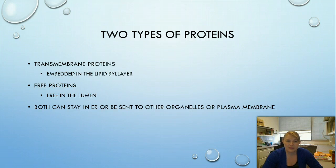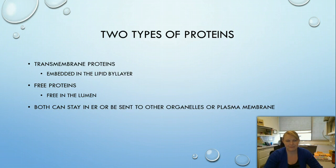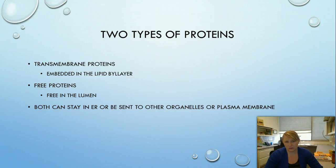Now let's talk about the two types of proteins that get made: transmembrane proteins and free proteins. These play a huge role in Chapter 16. Both types can either stay in organelles, in the lumen, or in the plasma membrane depending on context — this isn't limited to any one specific organelle.